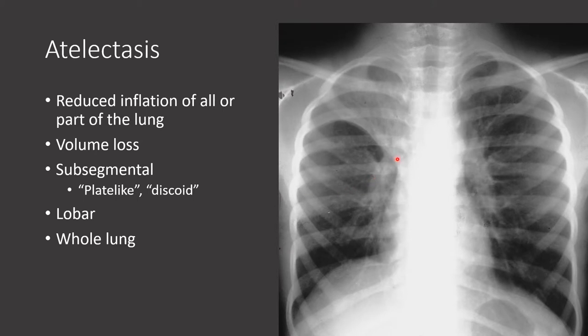On this chest x-ray, there's an area of increased opacity in the vertebral lung zone. Notice how the minor fissure is being pulled up towards the opacity, indicating volume loss. Also notice how the opacity is very uniform in appearance. This is an example of right upper lobe lobar atelectasis — that is, the whole lobe is collapsing — a different appearance from what we saw previously with subsegmental atelectasis.